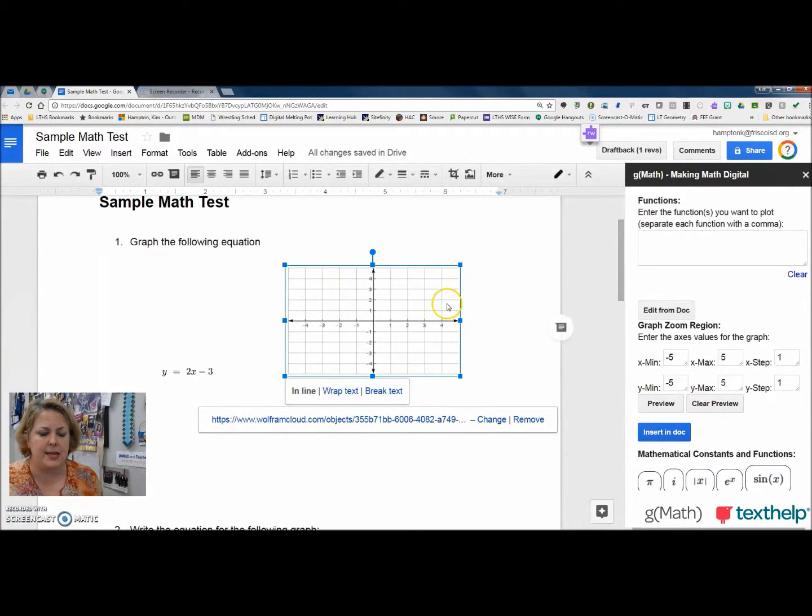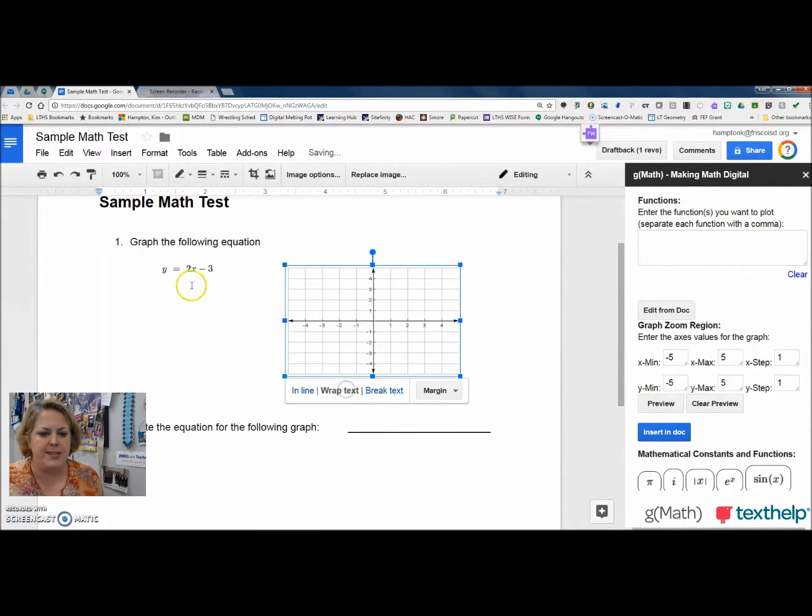Now, these things come in as images, so I can resize them if I want. Just like that. Very easy. I'm not sure I like this formatting, but if I hit wrap text, that'll send that equation up to the top. And I like that much better.